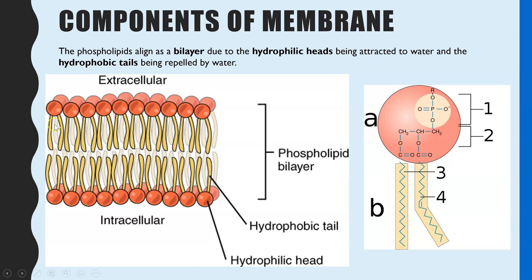The key component is the phospholipid bilayer. Bi meaning two — we have two layers of phospholipids. The way they arrange themselves is the hydrophilic heads are facing the outside, while the hydrophobic tails face the inside of the bilayer. This arrangement is because of the different properties of the head versus the tail of a phospholipid.